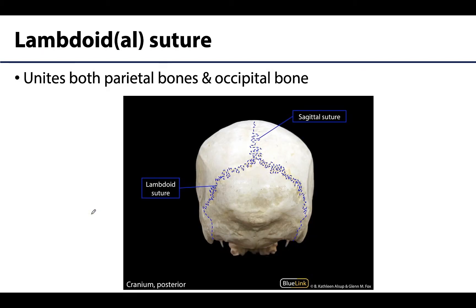Last but not least, and probably one of my all-time favorites, is the lambdoid or lambdoidal suture. I love this one because it can be extremely complex — the most zigzag of all the sutures. Occasionally you'll even have individual bones that form within this suture, referred to as sutural bones. The lambdoid suture is going to be between the parietal bones and the occipital bone, and you can see the sagittal suture meeting up with the lambdoid suture here.